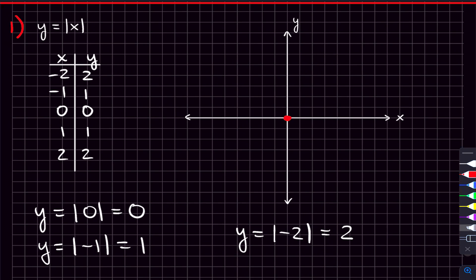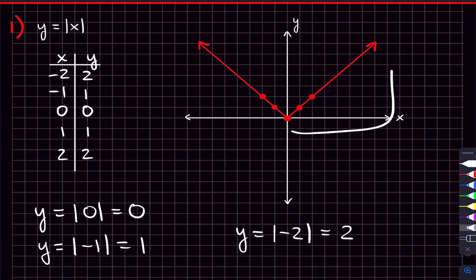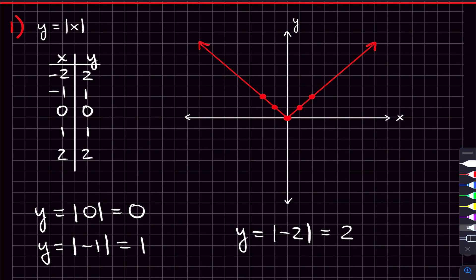Now we have points to plot: (0,0), (1,1), (2,2), (-1,1), and (-2,2). Connect those points and that is the graph of y = |x|. All other absolute value graphs are just variations of this one. There will be two differences: first, the turning point — called the vertex — will be in different locations on the xy plane; and second, the slope, meaning the direction those arms go, will differ.